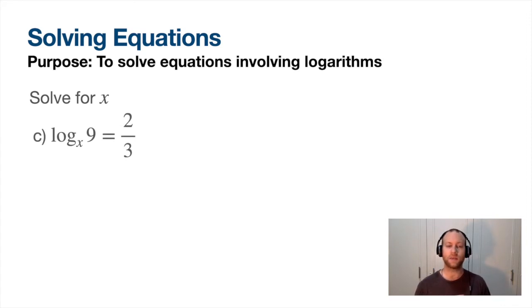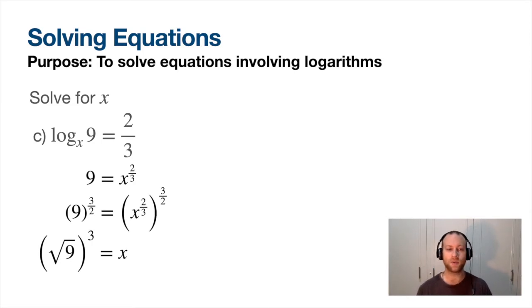More solving: log base x of 9 equals 2 over 3. I highly doubt you can just do shift solve in your calculator. You need to be able to do something like this. Again, base to the power of 2 over 3, so x to the power of 2 over 3 equals 9. In order to get x by itself I need to do the opposite root, so I'm going to put both sides to the power of 3 over 2 because that's going to cancel out the power over the x. Remember, a power to a power, this is our power law, you multiply those two powers which will give you a power of 1. So x equals the square root of 9 all cubed, so square root of 9 is 3, 3 to the power of 3 is going to give you 27.